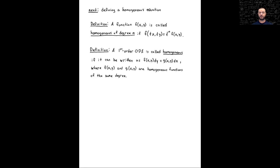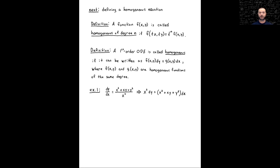The next definition relies on this. We're going to say a first-order ODE is called homogeneous if it can be written in this form. It looks like it's been separated, but there's a substantial difference. Even though we have individual differentials dy and dx, we're now allowing for the mixing of variables on both sides. If the ODE can be written as f(x, y) dy = g(x, y) dx, where those two functions are homogeneous of the same degree, then we say the ODE is itself homogeneous. Let's refer back to our first example to reference these two definitions.